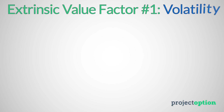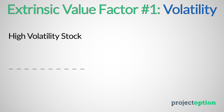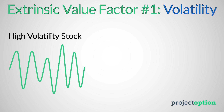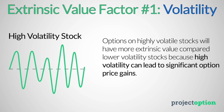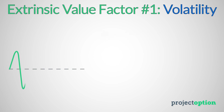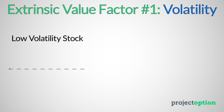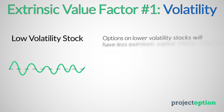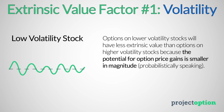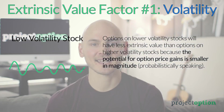Because of that volatility, options on that stock will have lots of extrinsic value — there's a higher likelihood those options could become significantly more valuable before they expire, compared to options on a much calmer stock like Coca-Cola or Walmart. A higher probability of options becoming substantially more valuable before expiration means those options trade with more extrinsic value compared to options on low volatility stocks.